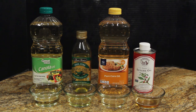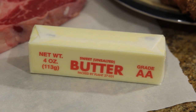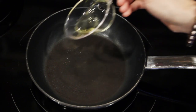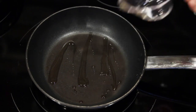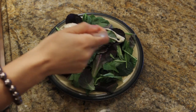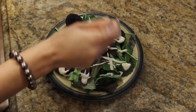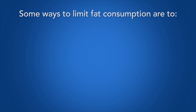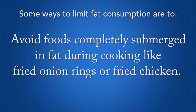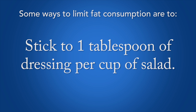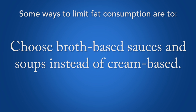If you're like most Americans, you may be thinking that good and fat wouldn't go together. But not all fats are created equal. Different types of fat affect the body in different ways. Fat is one of the essential nutrients of the body — we need it to live. However, even a small amount of fat has a high amount of calories, so it should be consumed in small amounts to avoid weight gain. Some ways to limit fat consumption are to avoid foods completely submerged in fat during cooking, like fried onion rings or fried chicken. Stick to one tablespoon of dressing per cup of salad and choose broth-based sauces and soups instead of cream-based.